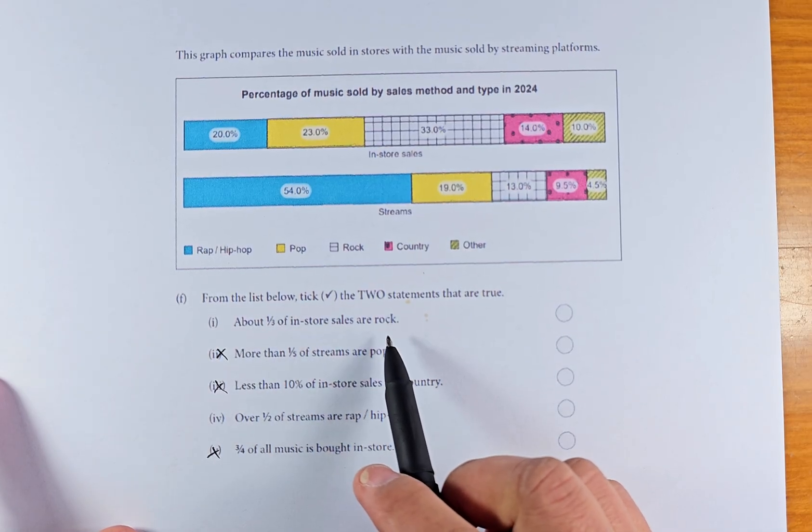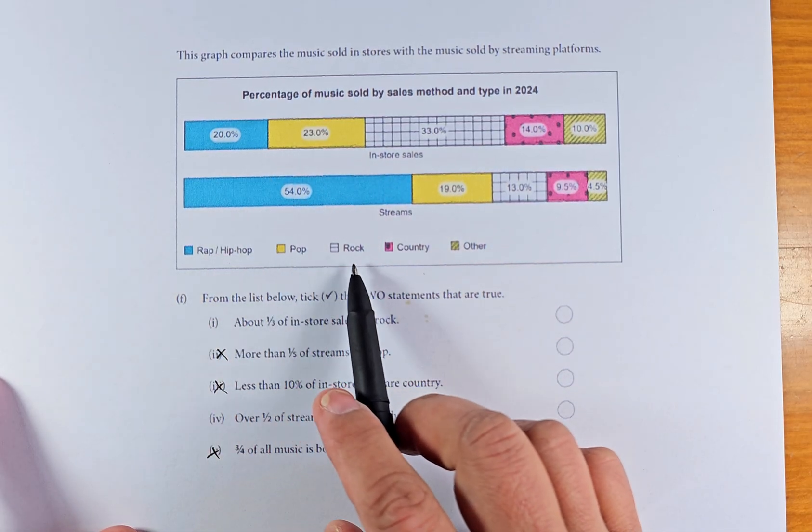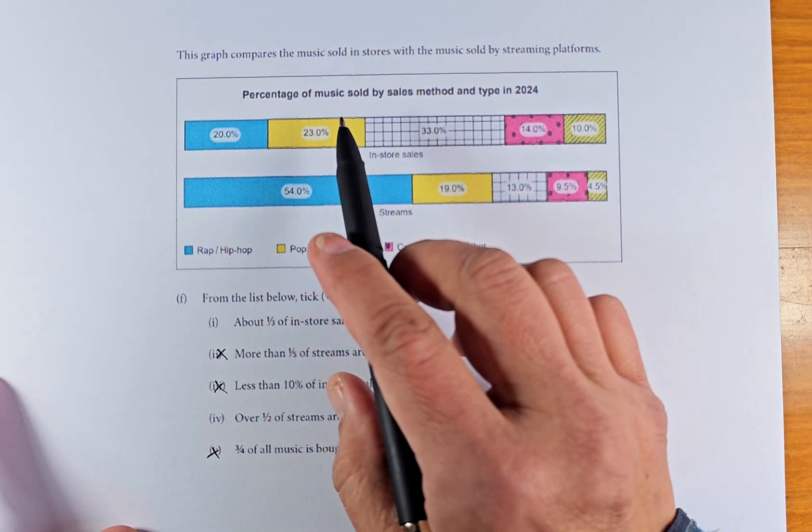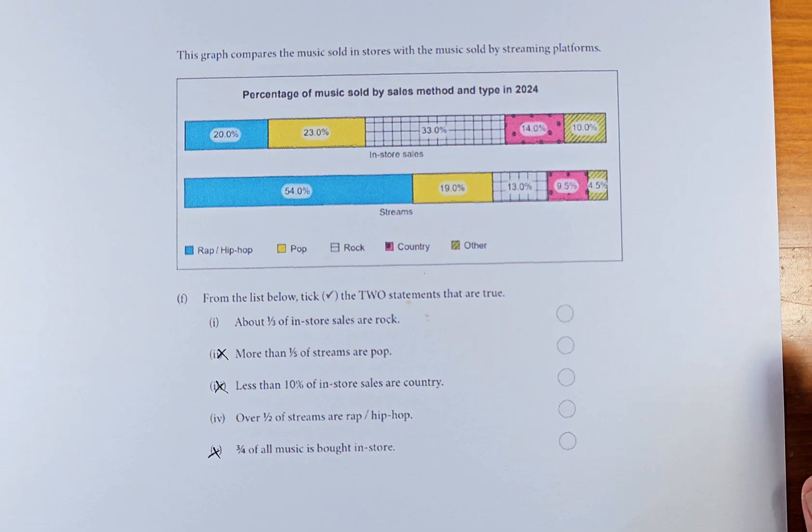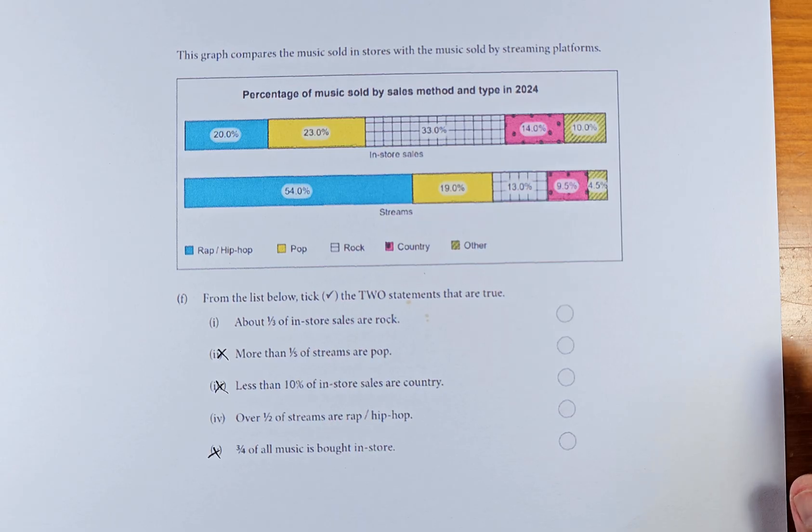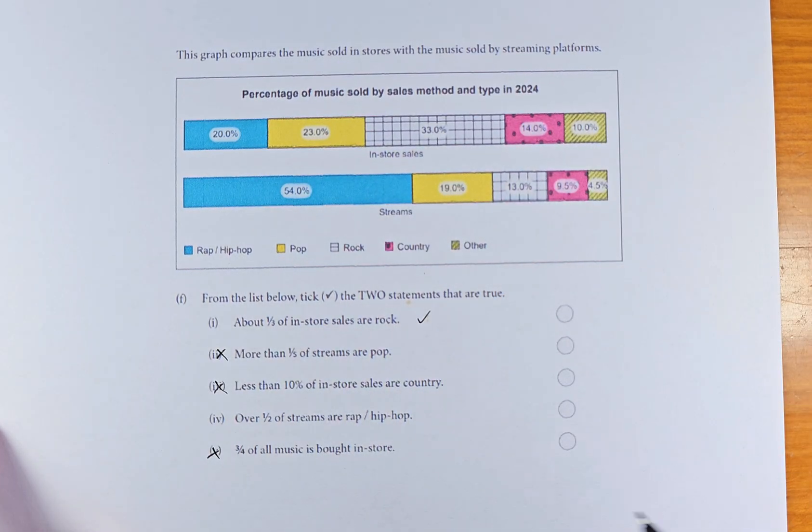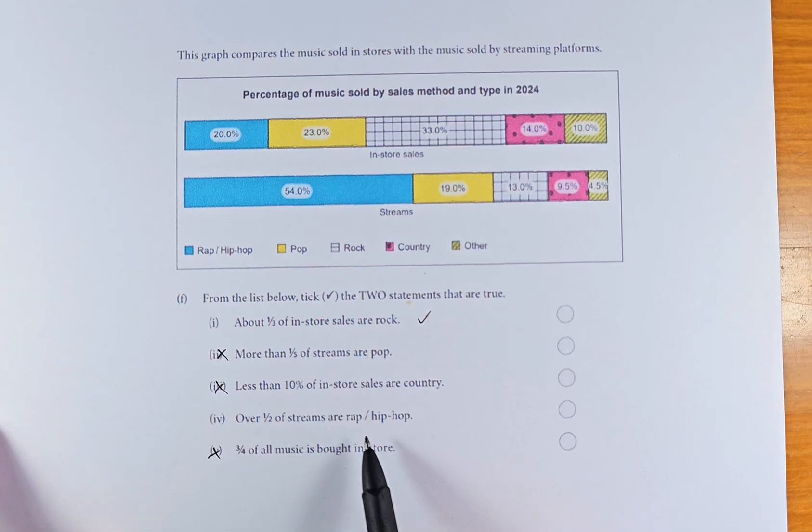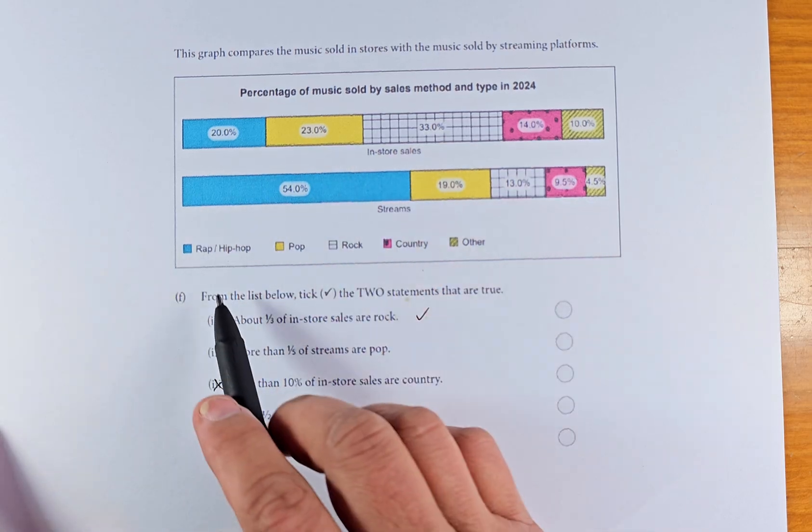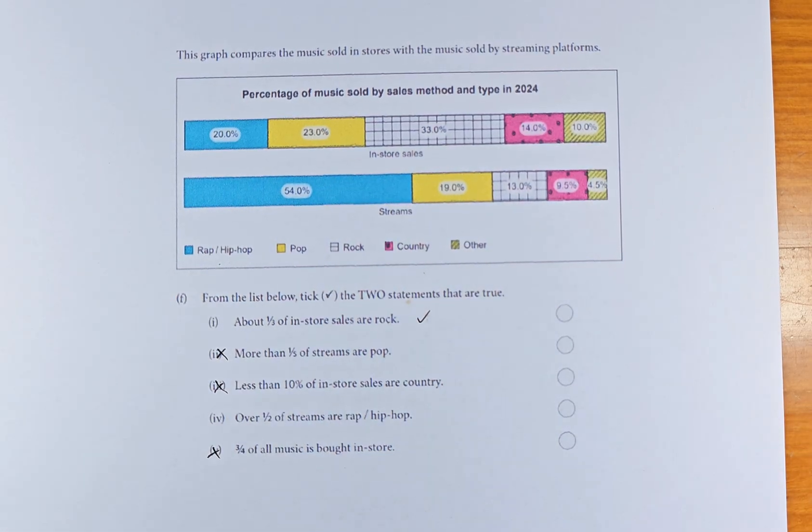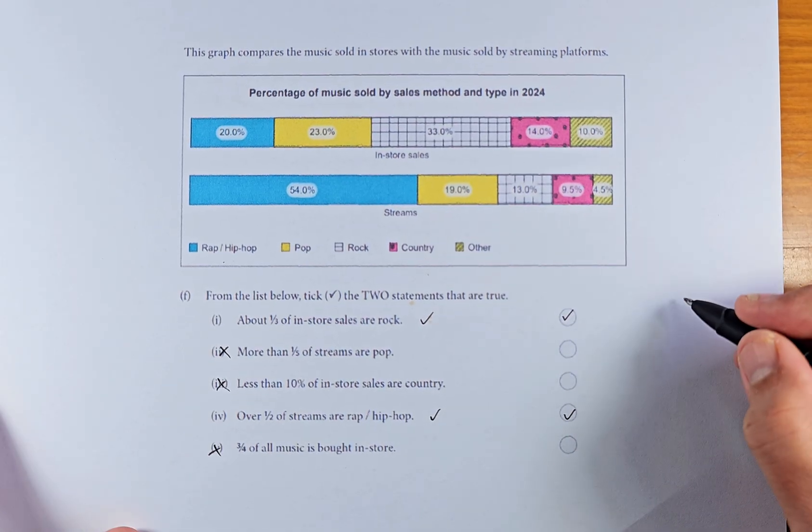So we shall look at 1 and 4. About one-third are rock. One-third of the in-store sales are rock. Rock is the yellow. About one-third. So 23% is about one-third. Rock, no, sorry, rock is this one. This is the rock. So rock one-third. 33% is one-third. So that's correct. And the last one, over half of streams are rap and hip-hop. The stream, about over half. So 54% is the rap and hip-hop. 54% is more than 50%. So that is again right. So the answer is 1 and 4. And if you get that right, that is outcome number 2.